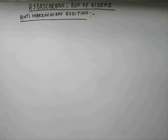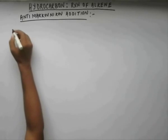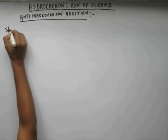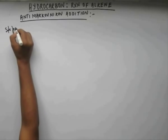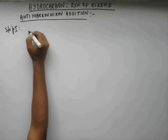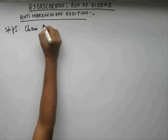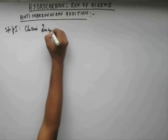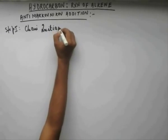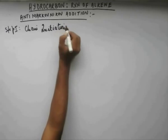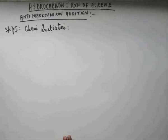Now the reaction takes place in three steps and the way we named photohalogenation of alkane, in the same manner we will name the steps for this reaction. In step number one, the step is called chain initiation.